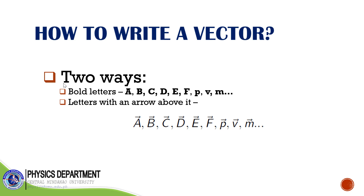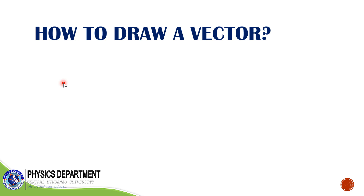I will discuss the unit vector later. How are we going to write a vector? There are two ways. First, you can write a vector in bold letters — say bold letter A, B, C, D, and so on. Another way is to write a vector with an arrow above it; as long as there is an arrow above the letter, that is one of the notations of a vector.